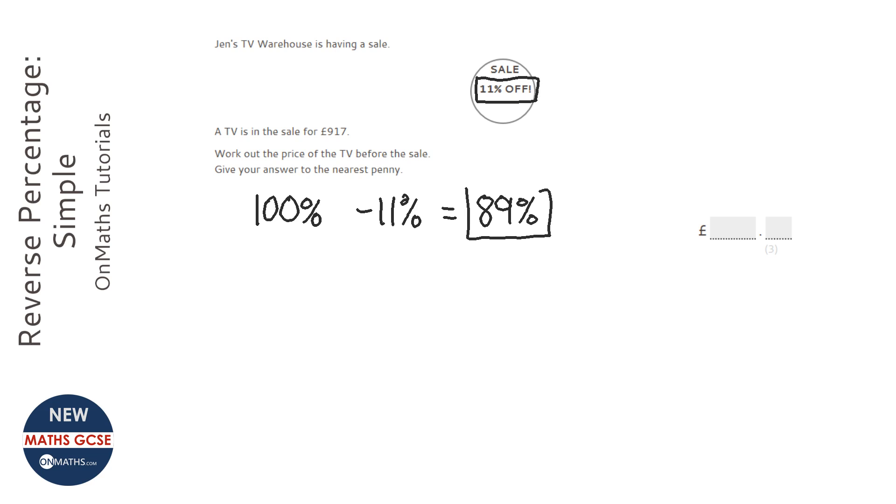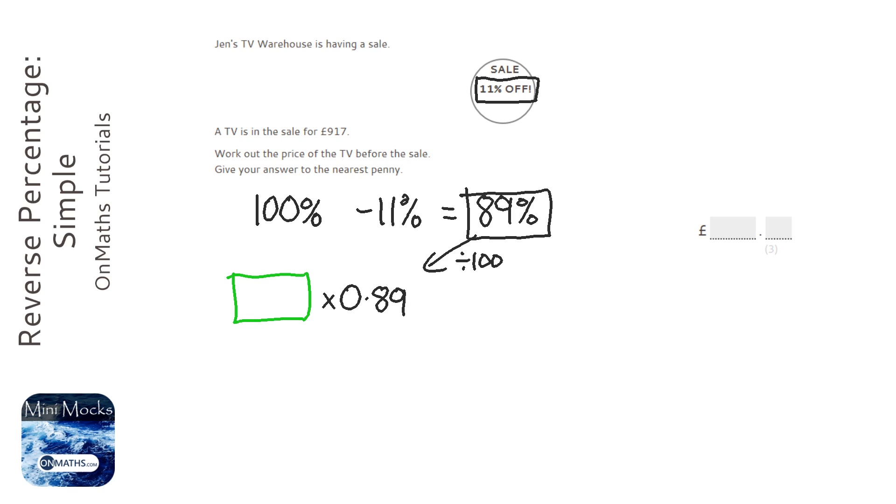Now 89% is not a multiplier yet. All you need to do is divide it by 100 to make it a decimal. So in your calculator or in your head, divide it by 100 and you get 0.89. And that's a multiplier because all we need to do is put any number in here, we times it by 0.89 and it gives us what the new number is with 11% taken off.